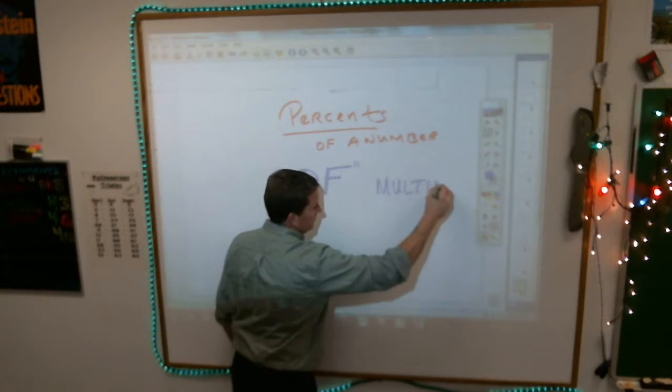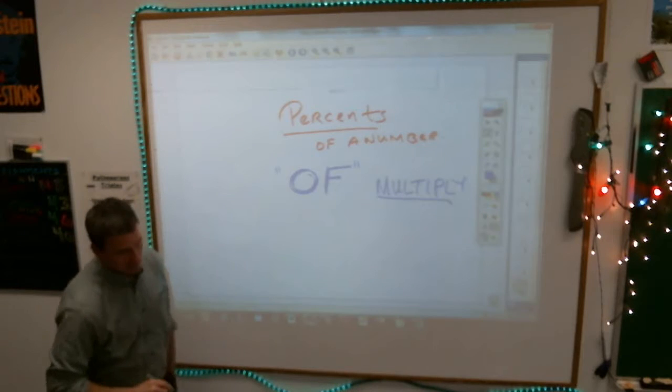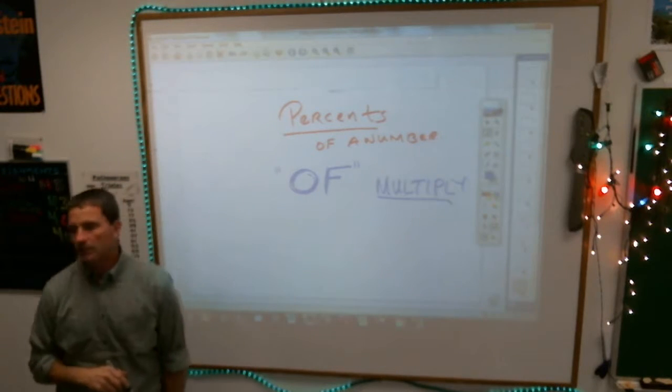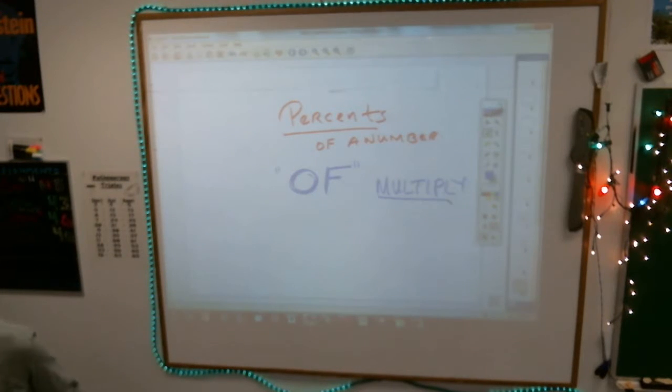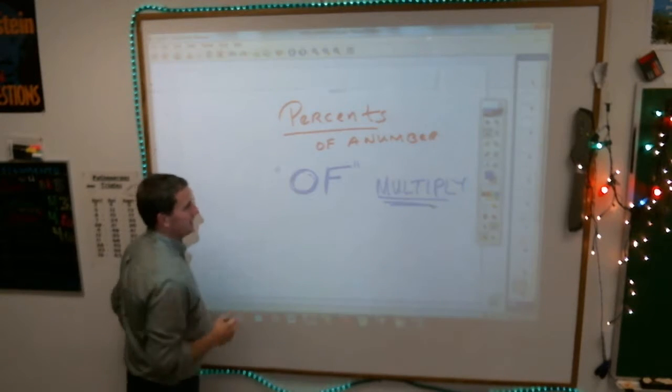People don't seem to connect with that. Another example is your parents. When they get their weekly, monthly, whatever paycheck from their employer, they have to pay a percentage of their salary in taxes, usually, unless there's some way they have around it. That means they have to multiply, it's always multiplying, by the percentage.